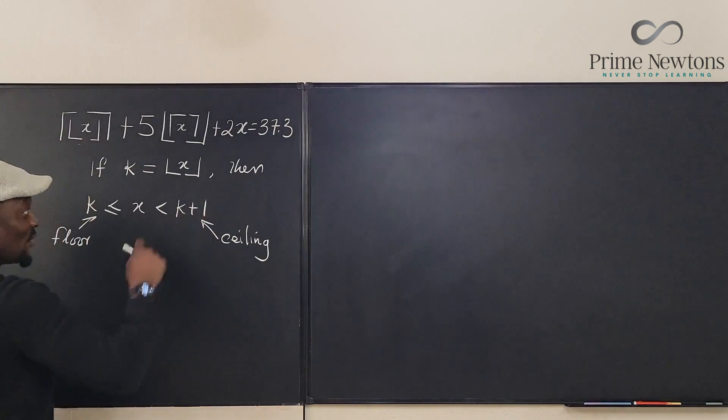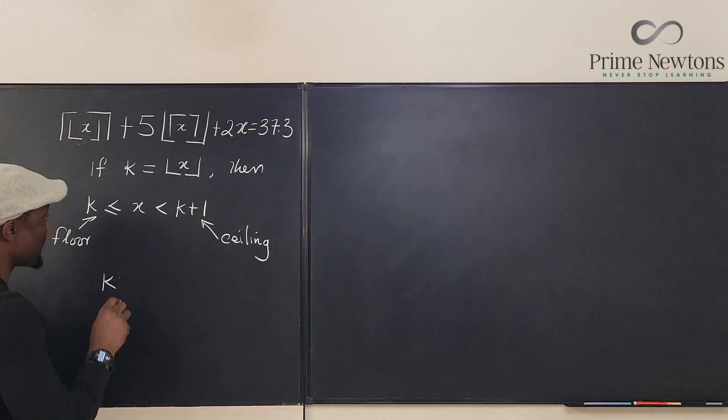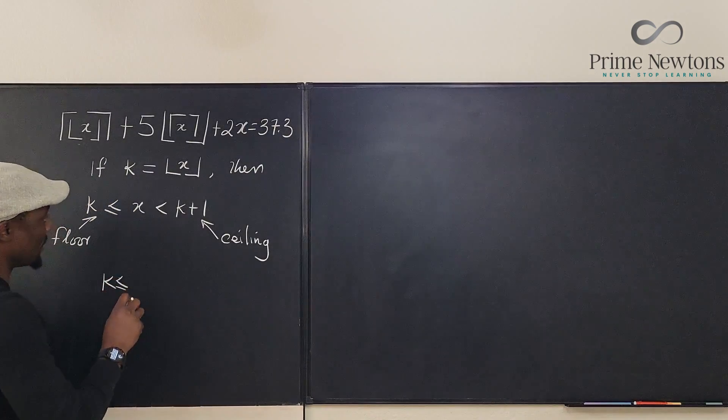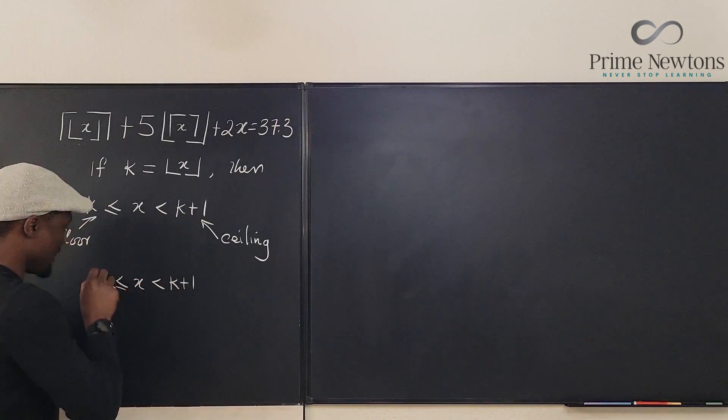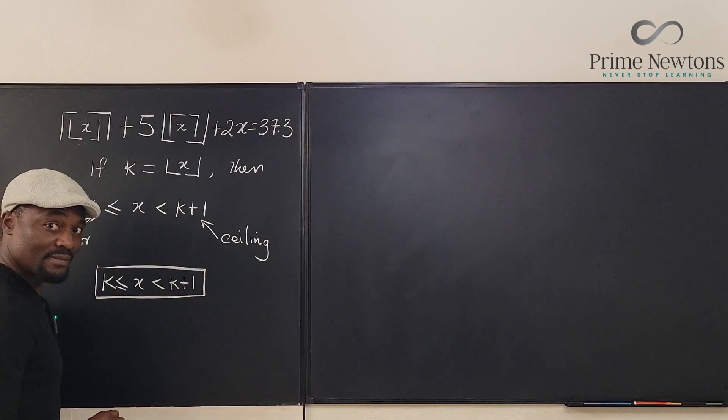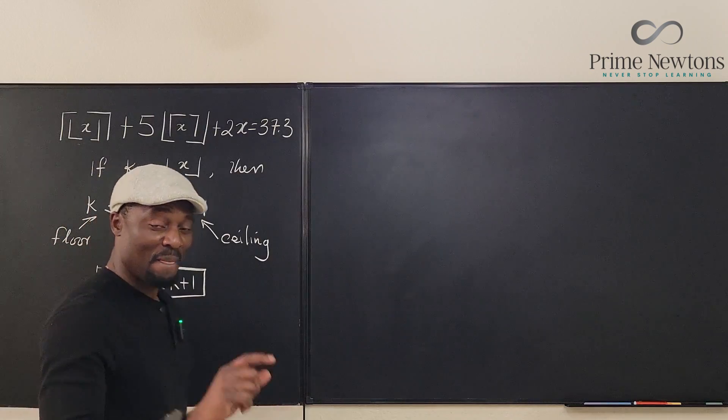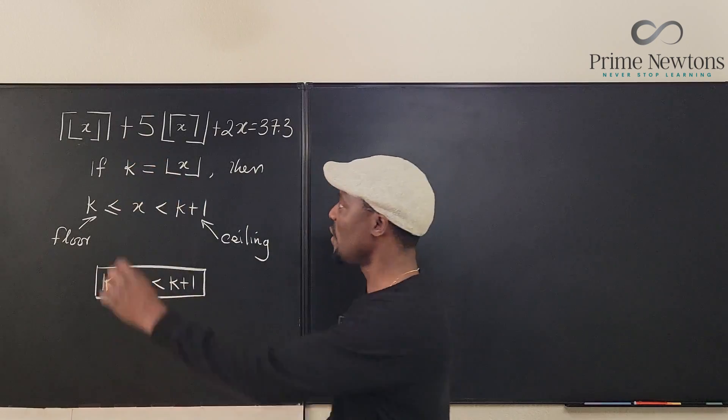And this is all we need. So let's put this in a box. We know that k is less than or equal to x and it's less than k plus 1. We put this in a box, we save it for the future.